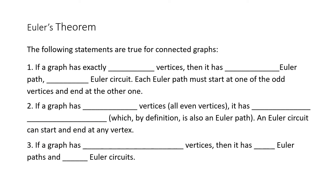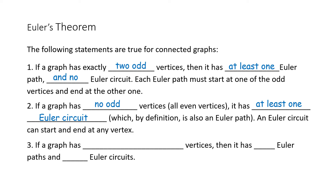Euler's Theorem. The following statements are true for connected graphs. 1. If a graph has exactly two odd vertices, then it has at least one Euler path and no Euler circuit. Each Euler path must start at one of the odd vertices and end at the other one. 2. If a graph has no odd vertices — meaning all vertices are even — it has at least one Euler circuit, which by definition is also an Euler path. An Euler circuit can start and end at any vertex. 3. If a graph has more than two odd vertices, then it has no Euler paths and no Euler circuits.